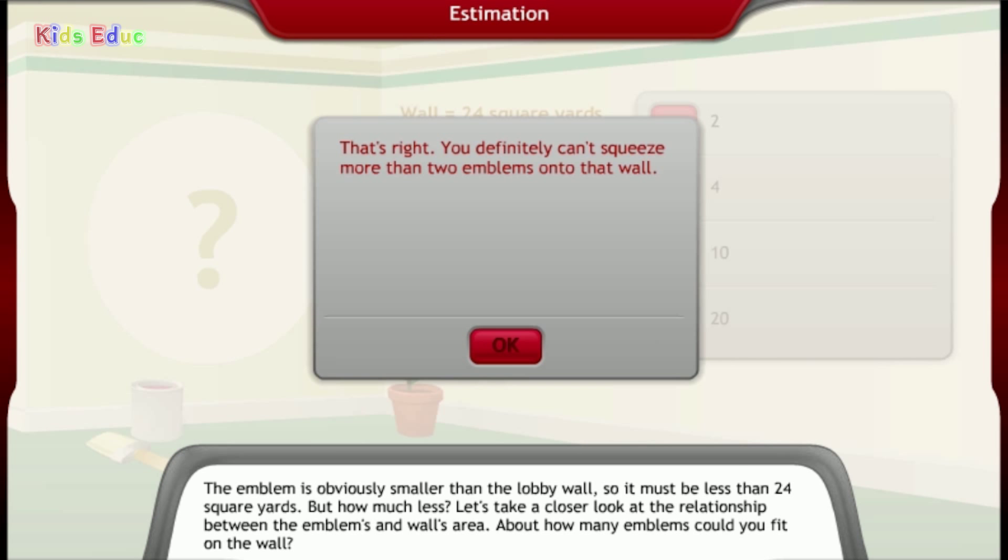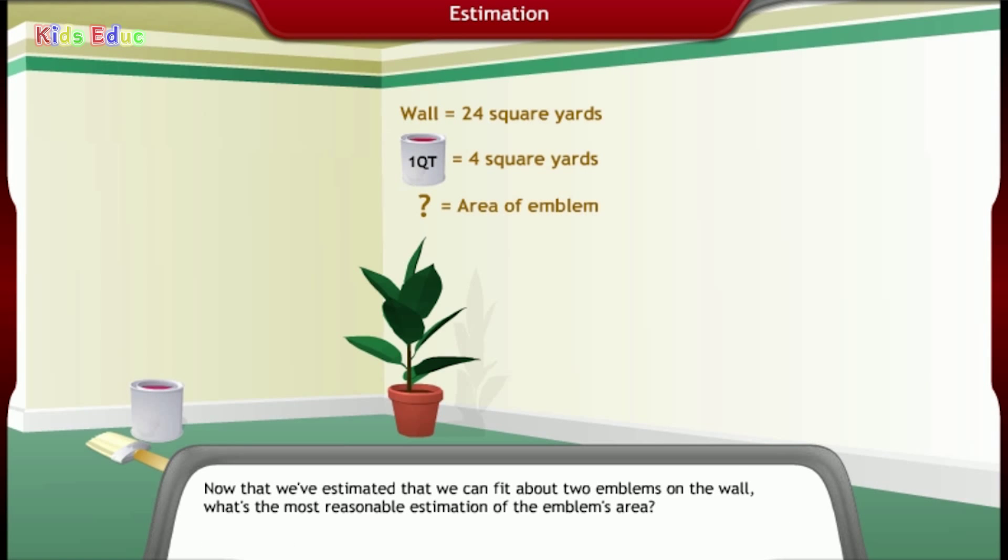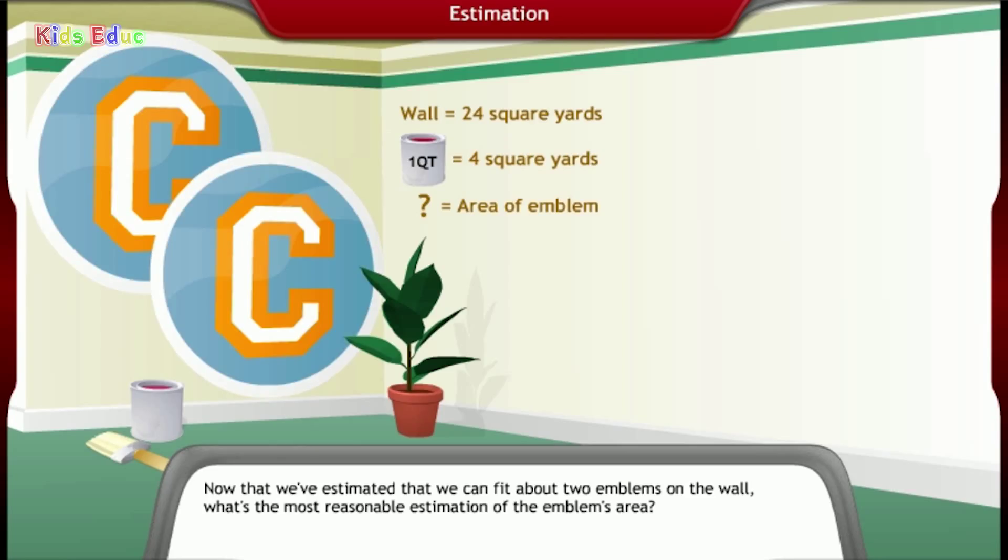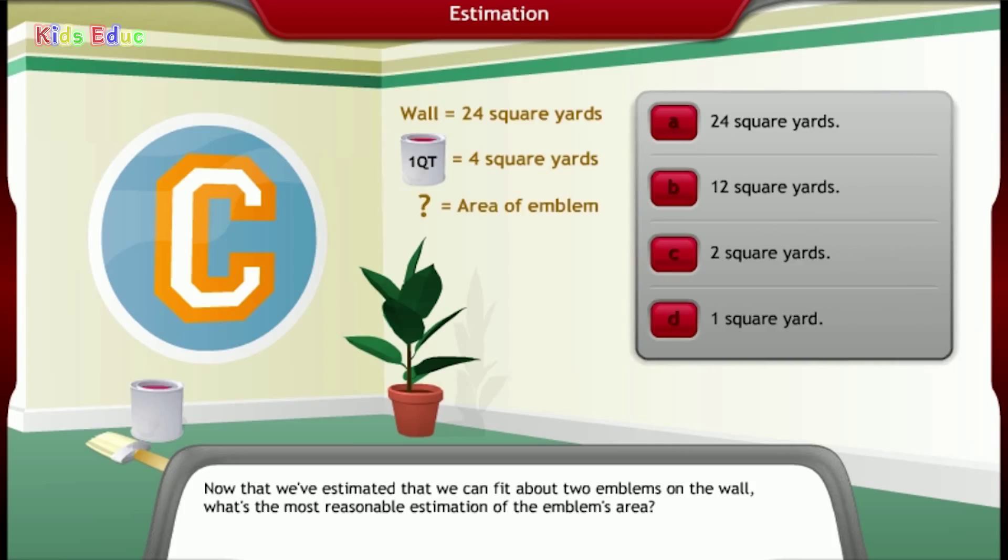2. That's right. Now that we've estimated that we can fit about two emblems on the wall, what's the most reasonable estimation of the emblem's area? 24 square yards, 12 square yards, 2 square yards, 1 square yards.